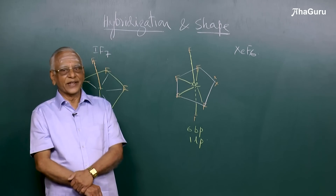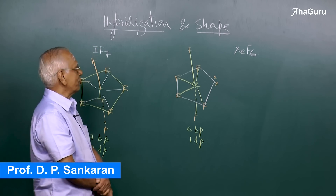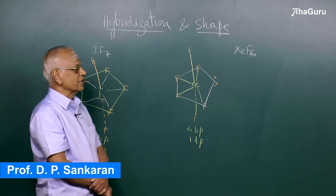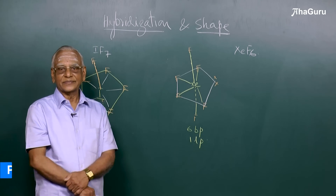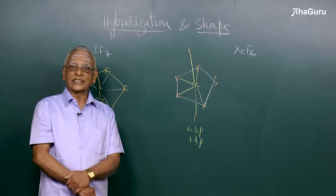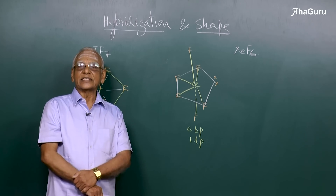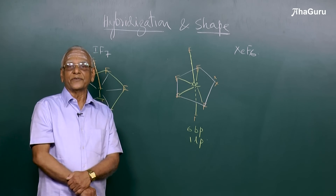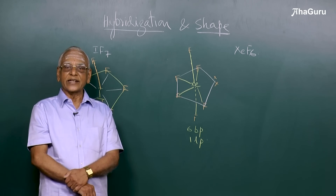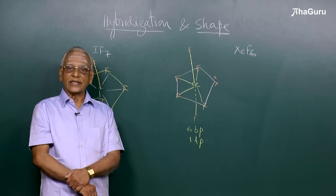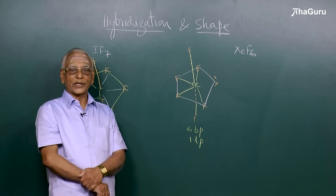In this video we shall see the difference between the hybridization and the shape of a molecule. In some cases both of them are the same — for example, if the hybridization is sp³ it refers to tetrahedral, and if the hybridization is d²sp³ it refers to an octahedral molecule.